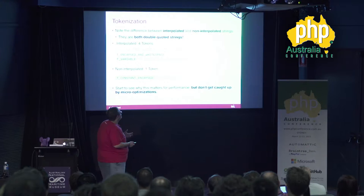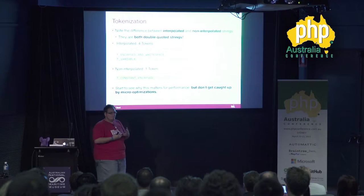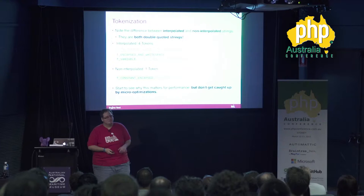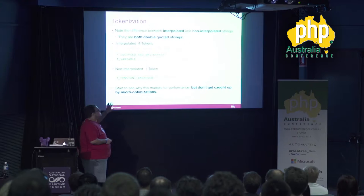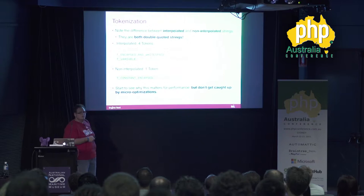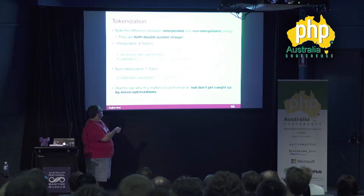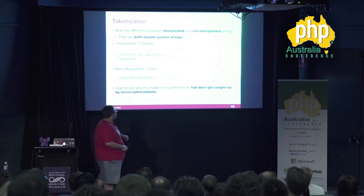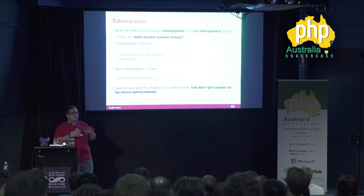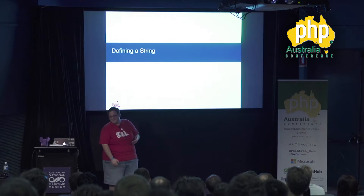Something I like to bring up is the difference between interpolated and non-interpolated strings. When people talk about micro-optimizations, it's always double quotes versus single quotes — what's faster? We have two strings in our example. The interpolated one gets turned into four different tokens: an open quote, the static string, the variable, and the closing quote. Whereas the other is just one token: T_CONSTANT_ENCAPSED_STRING. So four tokens versus one — you can see where this leads into performance, but as you'll see at the end, it's all a bunch of nonsense.